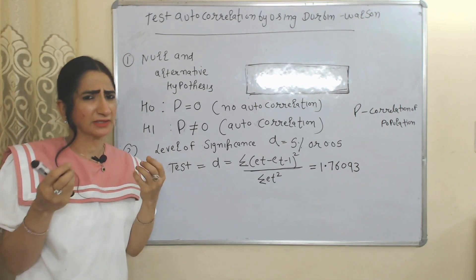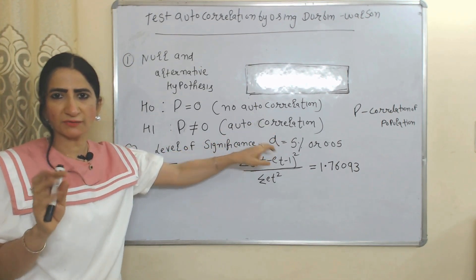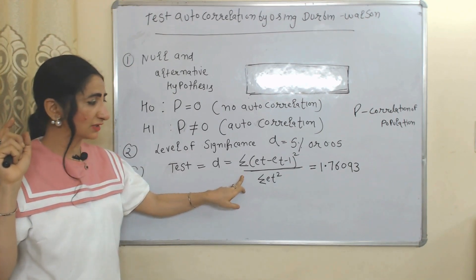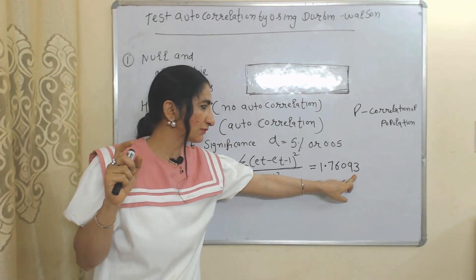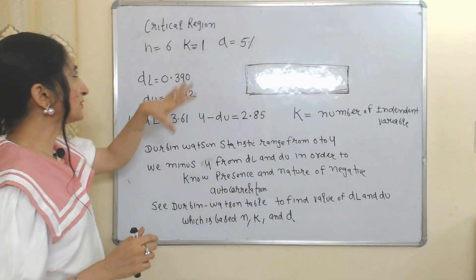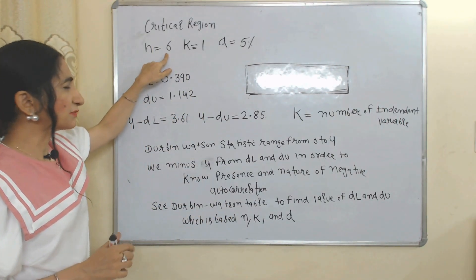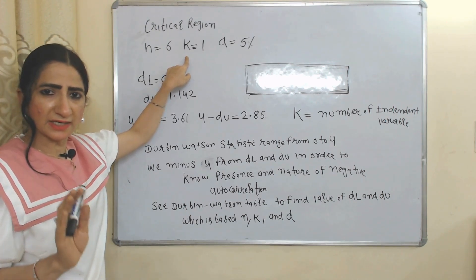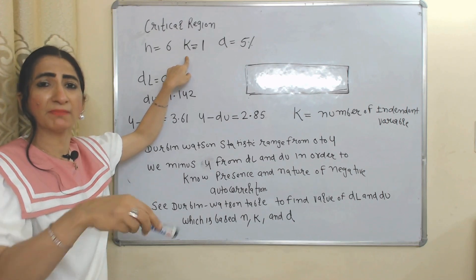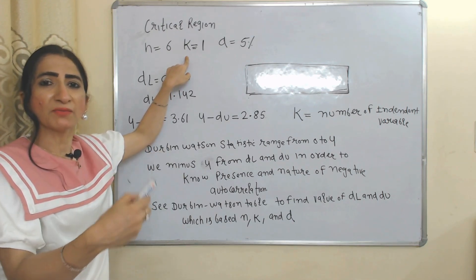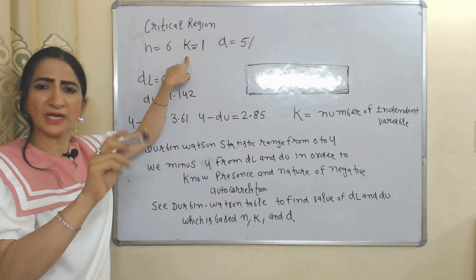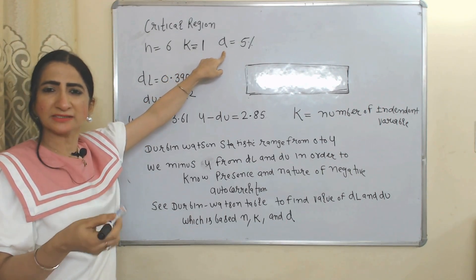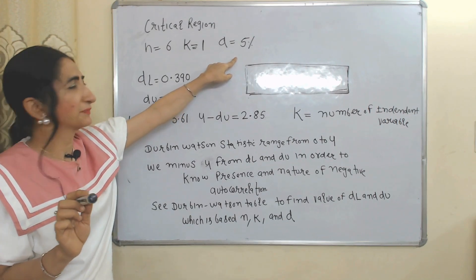Then we set a level of significance. If it is not given, we assume five percent. We apply the Durbin-Watson formula, which we have already calculated. Now we will use the critical region. The number of observations is six, k is the number of independent variables — in simple linear regression we have only one independent variable — and alpha is five percent.